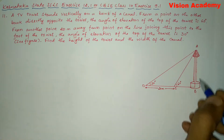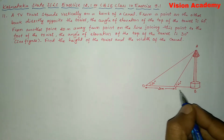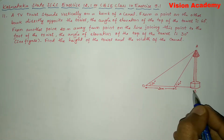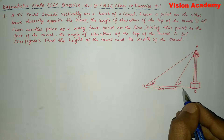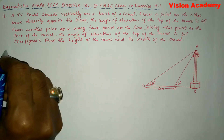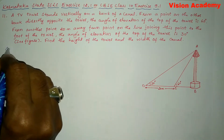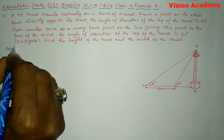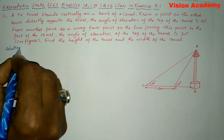Here we need to find AB, which is the height of the tower, and BC, which is the width of the canal. Now let us find the solution for the given problem.